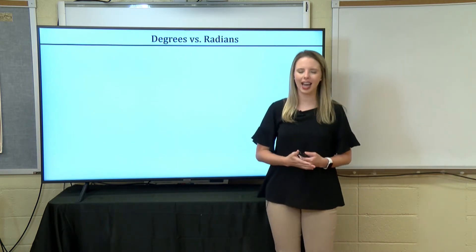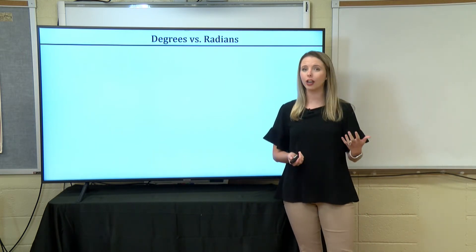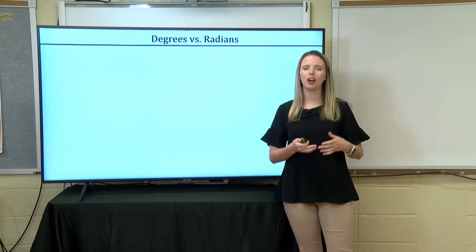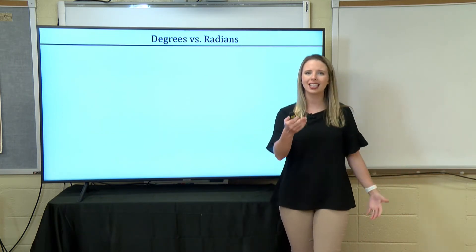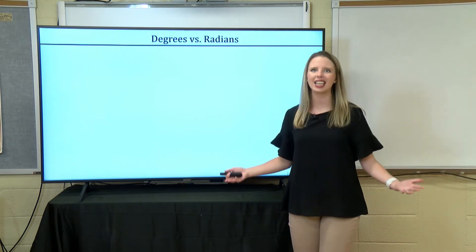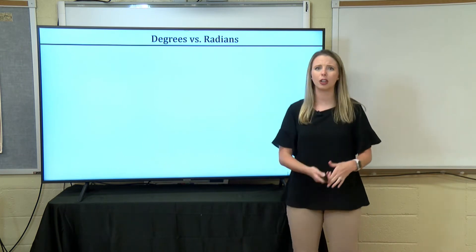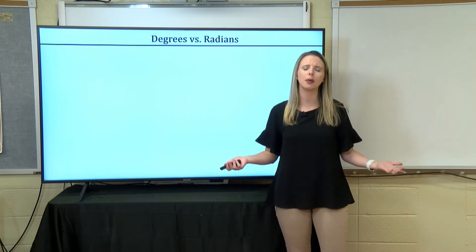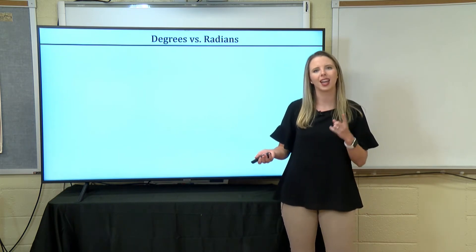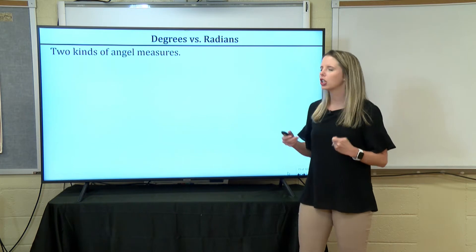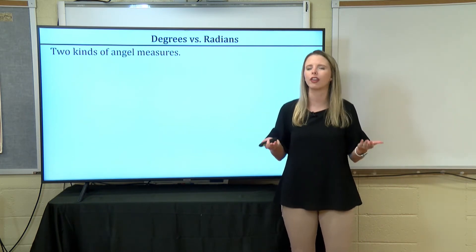Degrees versus radians — today we're going to dive into radians. You may not have heard of radians before. We hear of degrees a lot; in geometry we talk about 90 degrees, 45 degrees, 180 degrees. When I tell you a 90-degree angle, you immediately know that's a right angle. But if I say pi over 2, you may not immediately know what that angle looks like. They're just two different kinds of angle measures — the same angle being represented in two different languages.